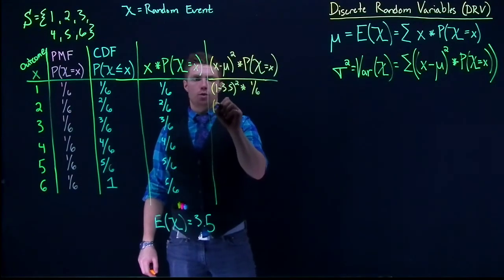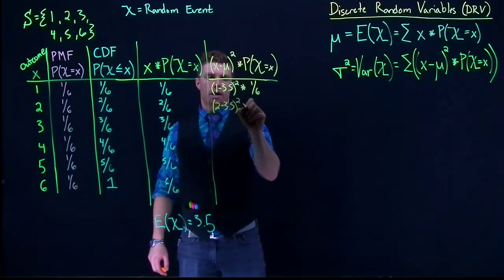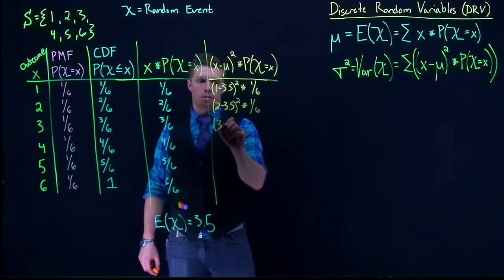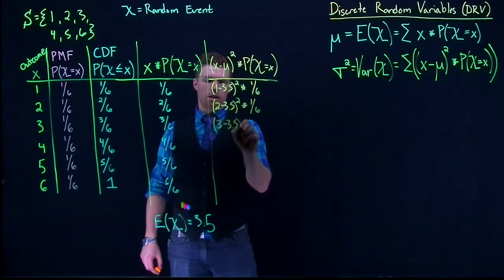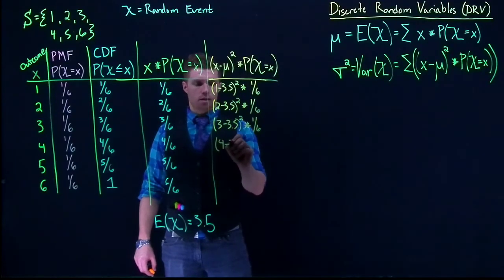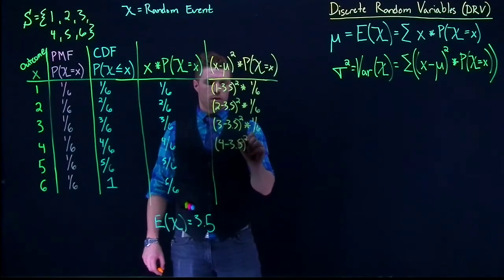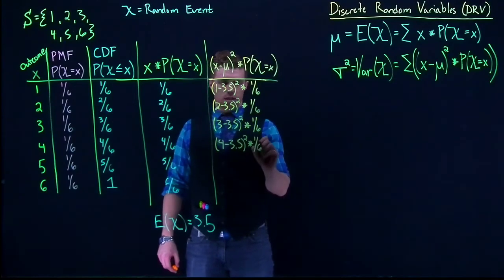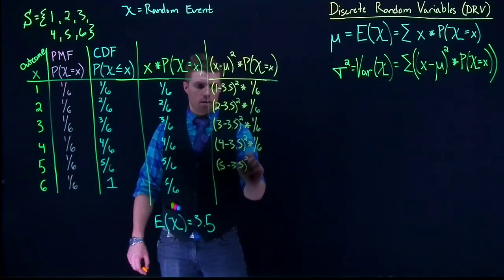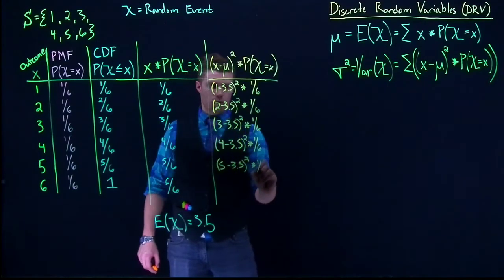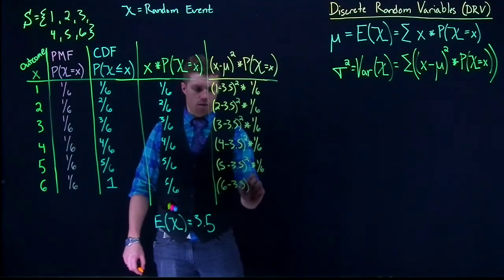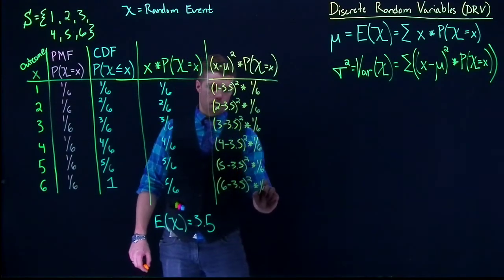All right, then we can do the next one. We can do 2 minus 3.5 squared times 1 over 6. And then we can do 3 minus 3.5 squared multiplied by 1/6. 4 minus 3.5 squared multiplied by 1/6. Almost there. 5 minus 3.5 squared multiplied by 1/6. And here we go. 6 minus 3.5 squared times 1/6.